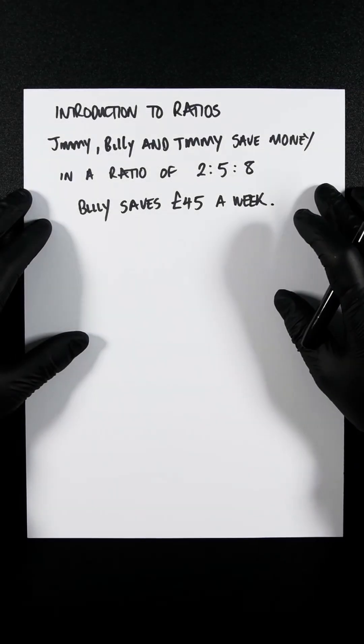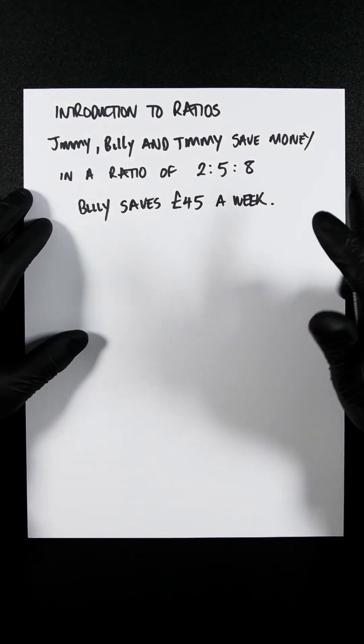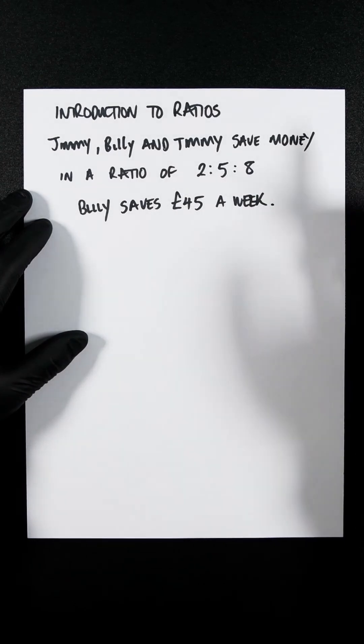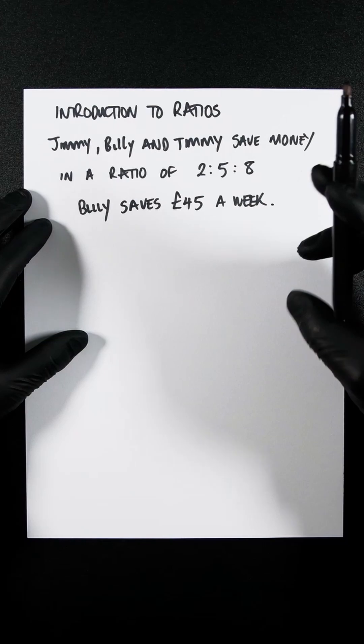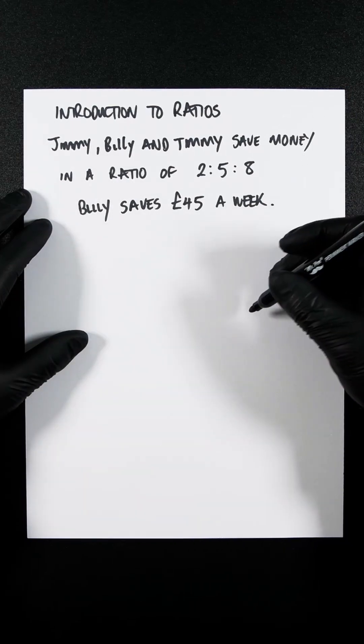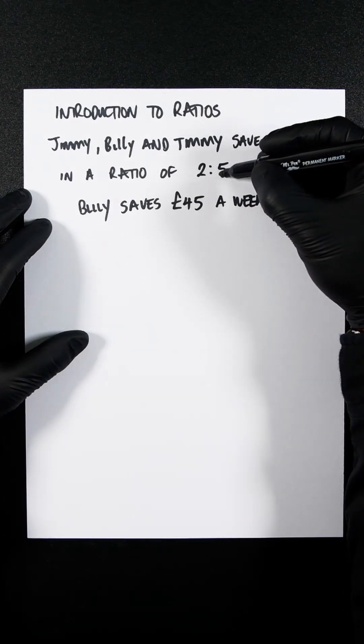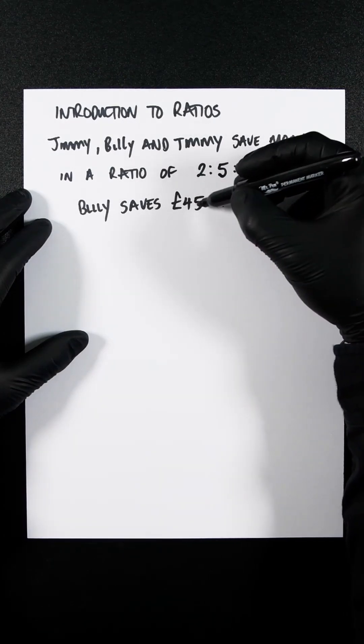We've got this very real scenario with Jimmy, Billy and Timmy in which they're saving money in a ratio like this, which is obviously exactly how you would express that. So we know that Billy, the middle guy which corresponds to the five here, saves 45 pounds a week.